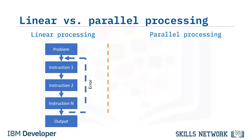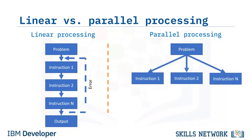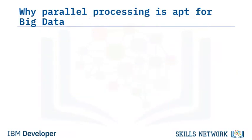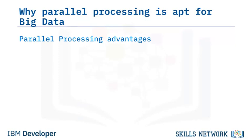The alternative to linear processing is parallel processing. Here too, the problem statement is broken down into a set of executable instructions. The instructions are then distributed to multiple execution nodes of equal processing power and are executed in parallel. Since the instructions are run on separate execution nodes, errors can be fixed and executed locally, independent of other instructions. Parallel processing offers significant advantages when dealing with complex problems such as Big Data.